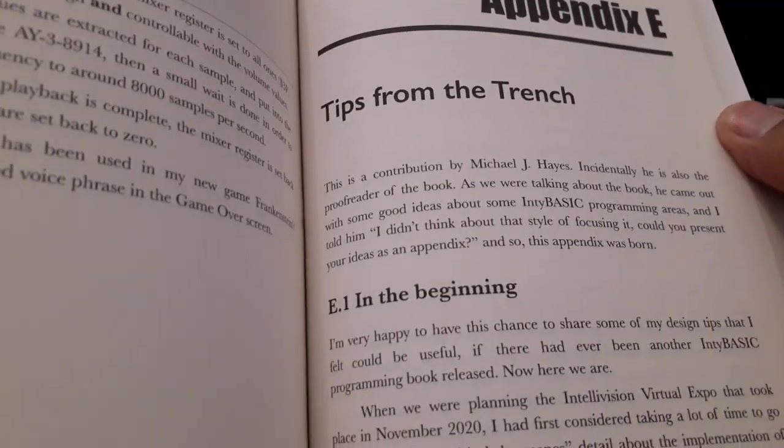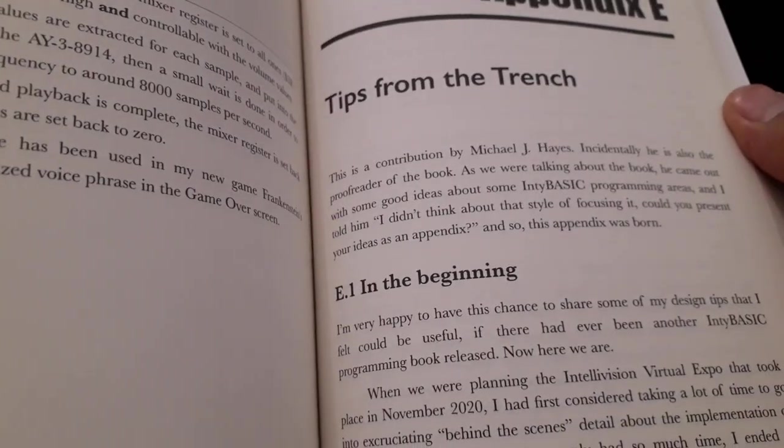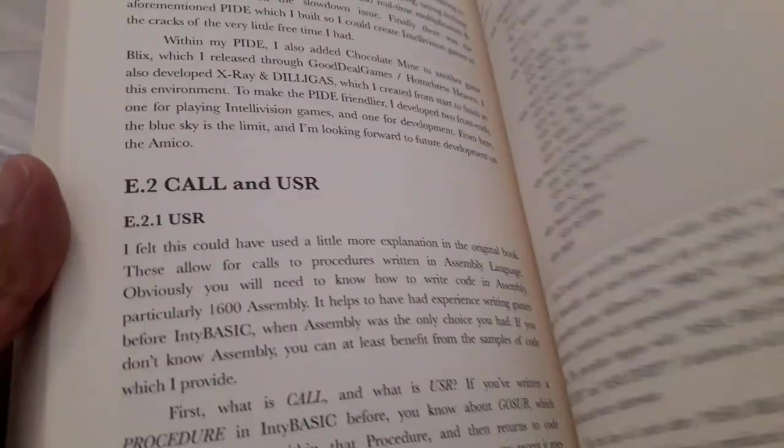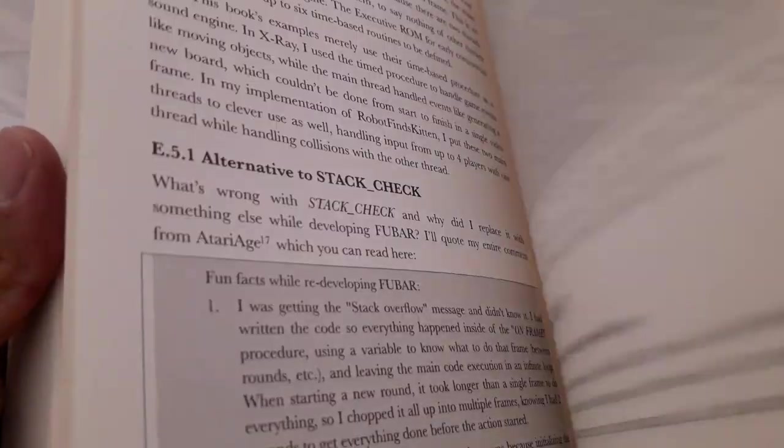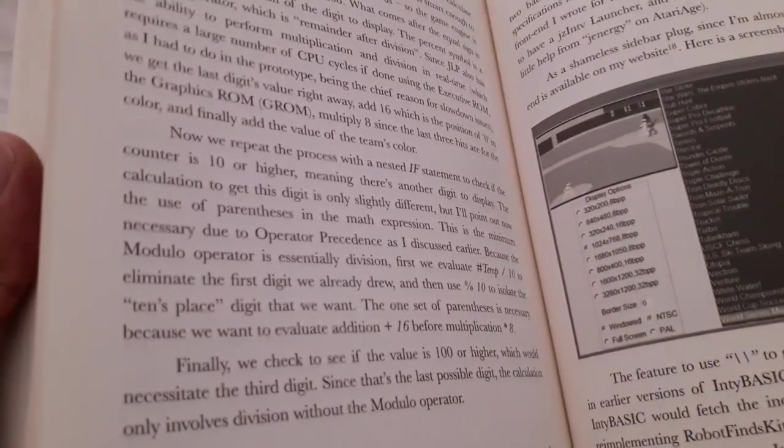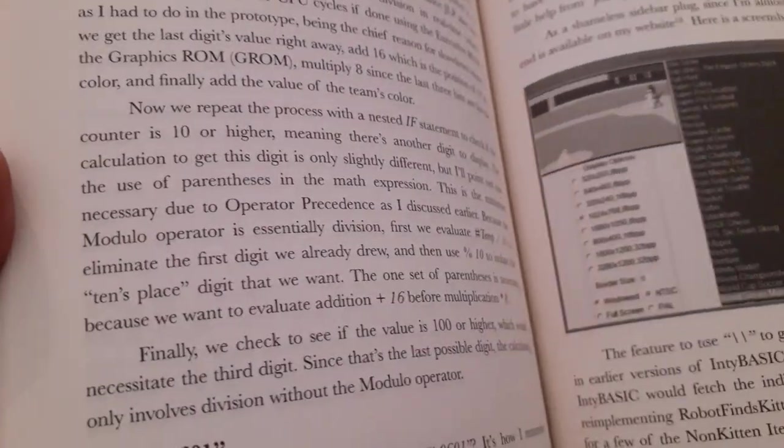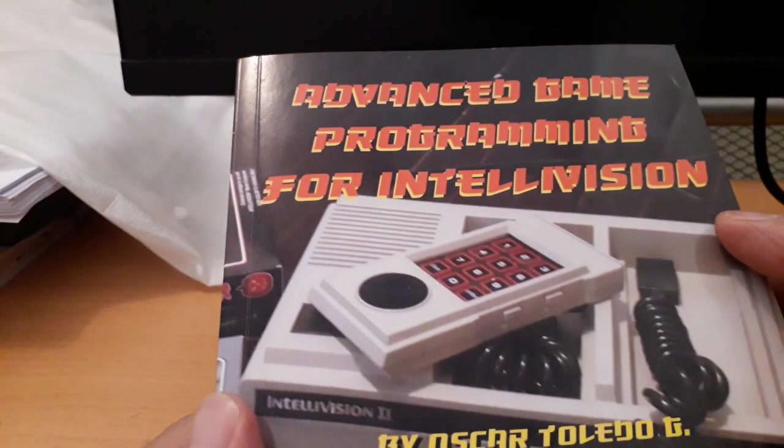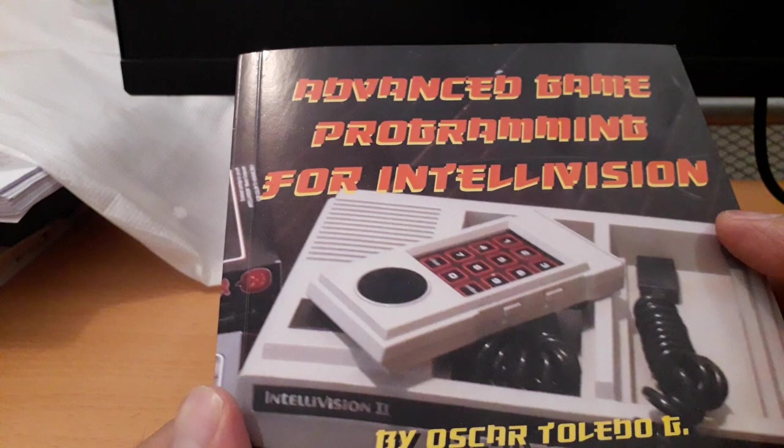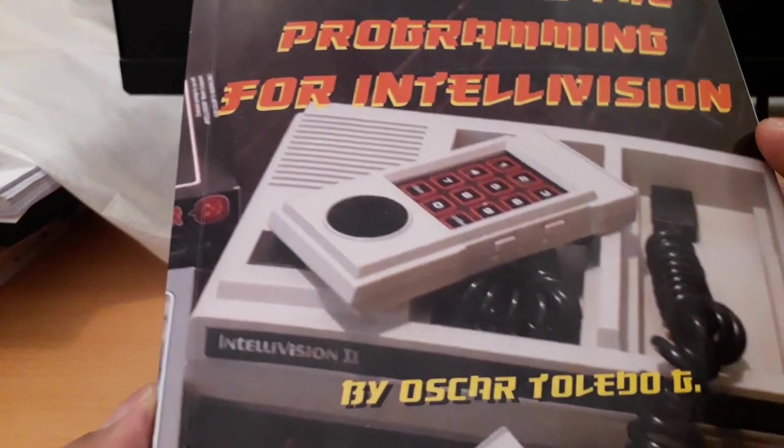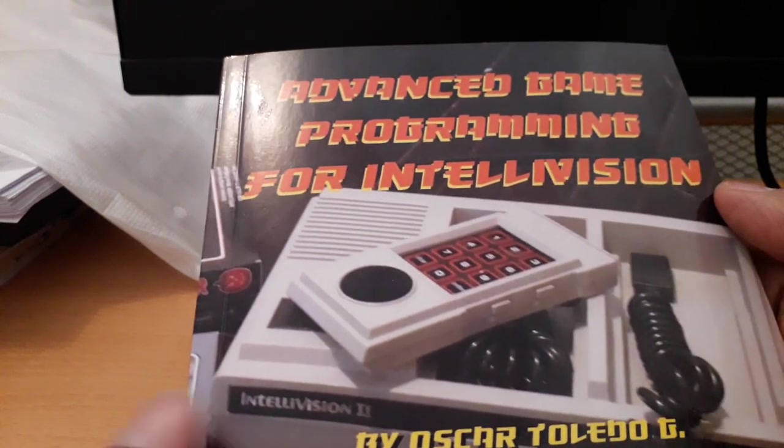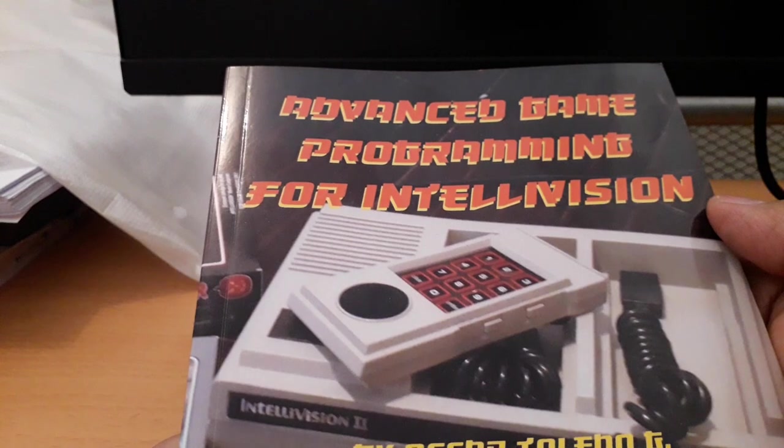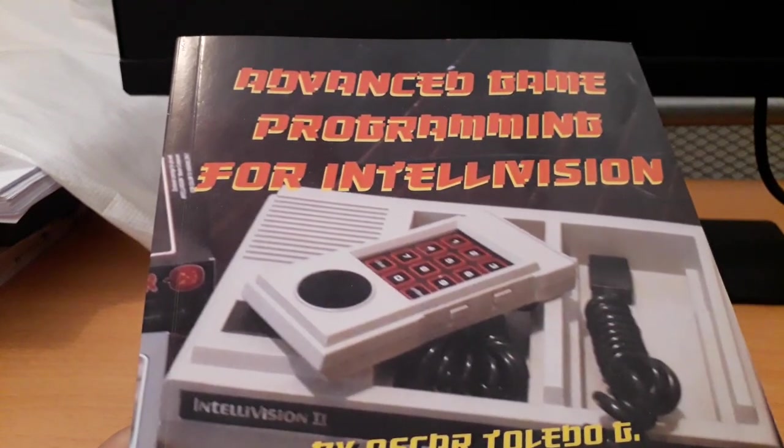And tips from the trench by Michael Hayes. This is a treasure of information about programming Intellivision. Advanced Game Programming for Intellivision is available from lulu.com and Amazon in paperback and hardcover, also as ebook. Thank you very much for watching, give us a like, see you.